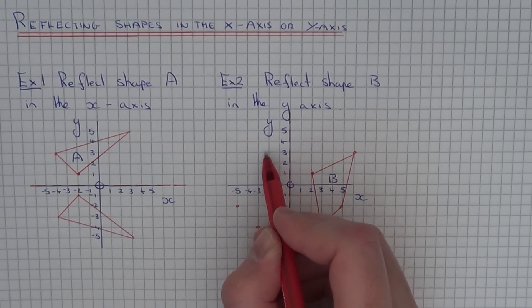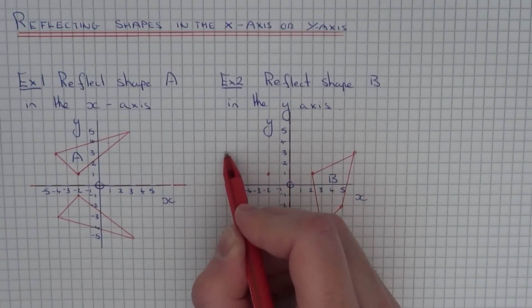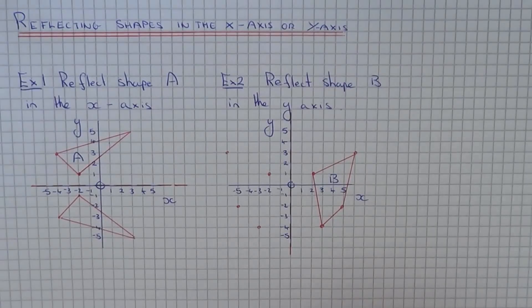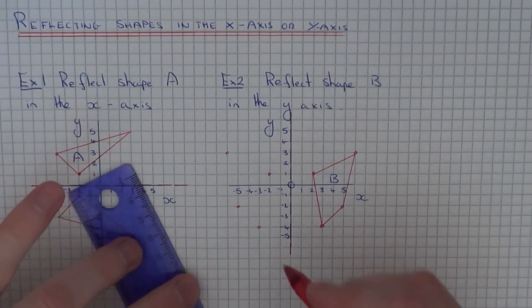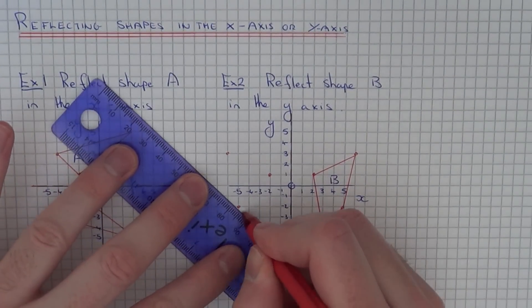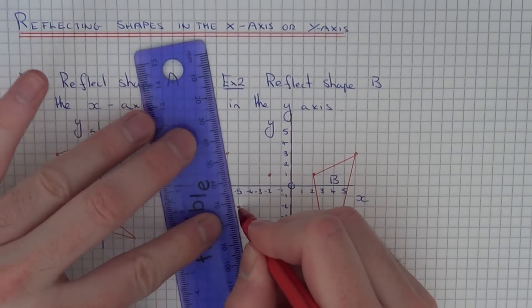One, two, three, four, five, six. So again, just get your ruler and join those points up neatly with the ruler.